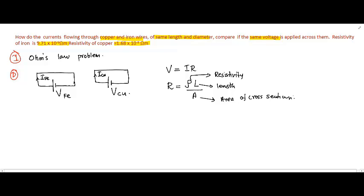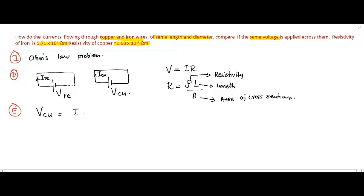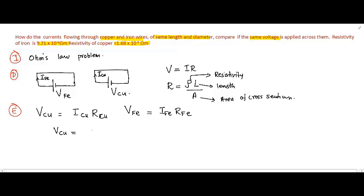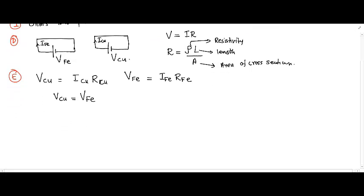We need to use these two equations to get a comparison of the current flowing through the two wires. The voltage across the copper wire equals the current through the copper wire times the resistance of the copper wire. The voltage across the iron wire equals the current through the iron wire times the resistance of the iron wire. Since the voltages are the same, we can equate them.